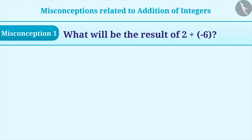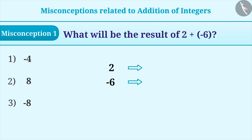Misconception 1. What will be the result of 2 plus minus 6? For the addition of numbers having opposite signs, first we will find the value of numbers ignoring their signs, which we call as numeral value.